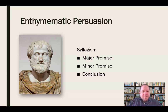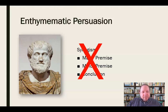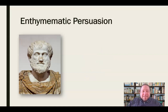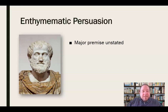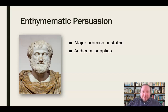He looked at the syllogism — the major premise, the minor premise, and the conclusion — and said that's not necessarily the most effective route to persuasion. So instead, we skip the major premise. We just leave it unstated as a persuader. We leave it unstated and let the audience supply what they think the major premise is, so that we have that connection.